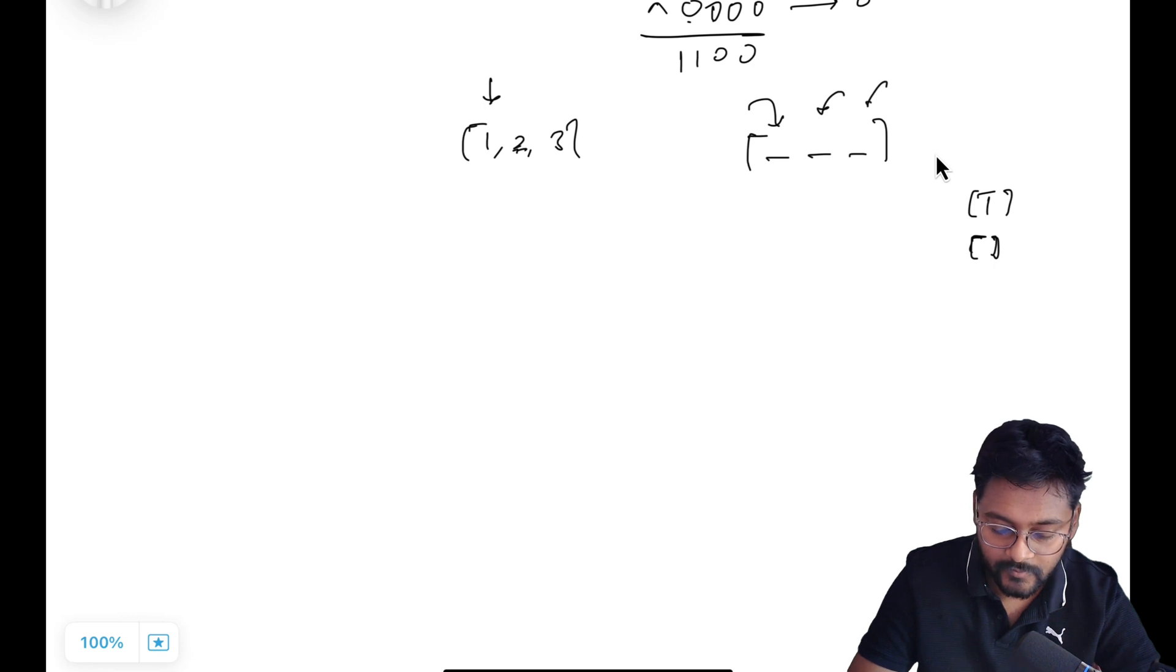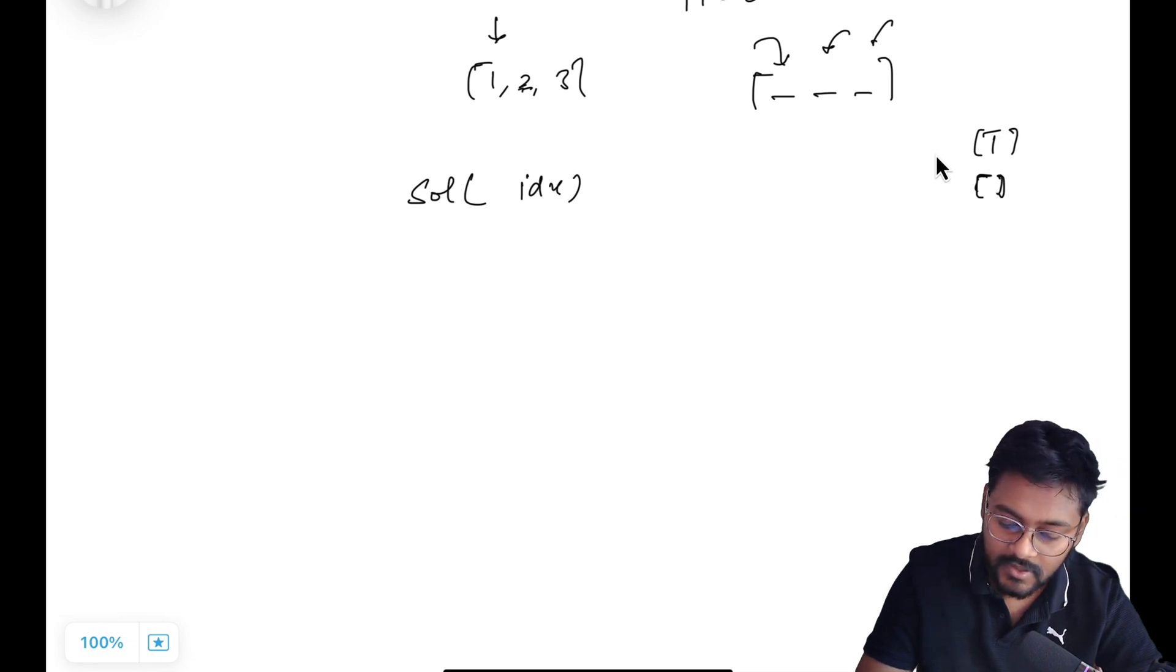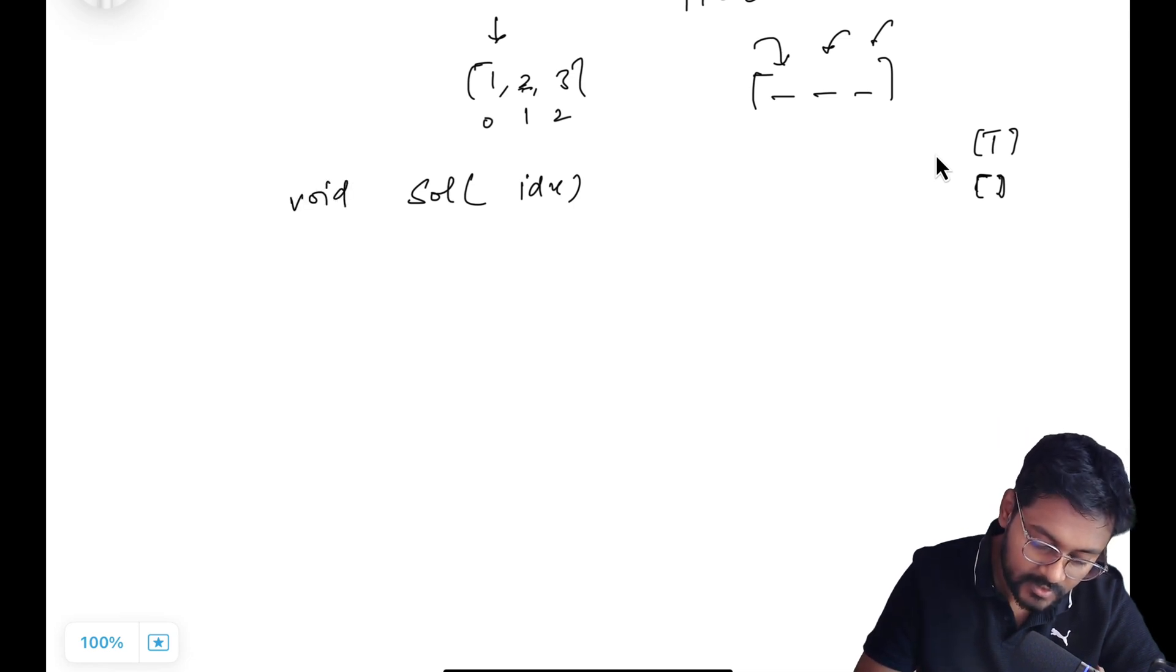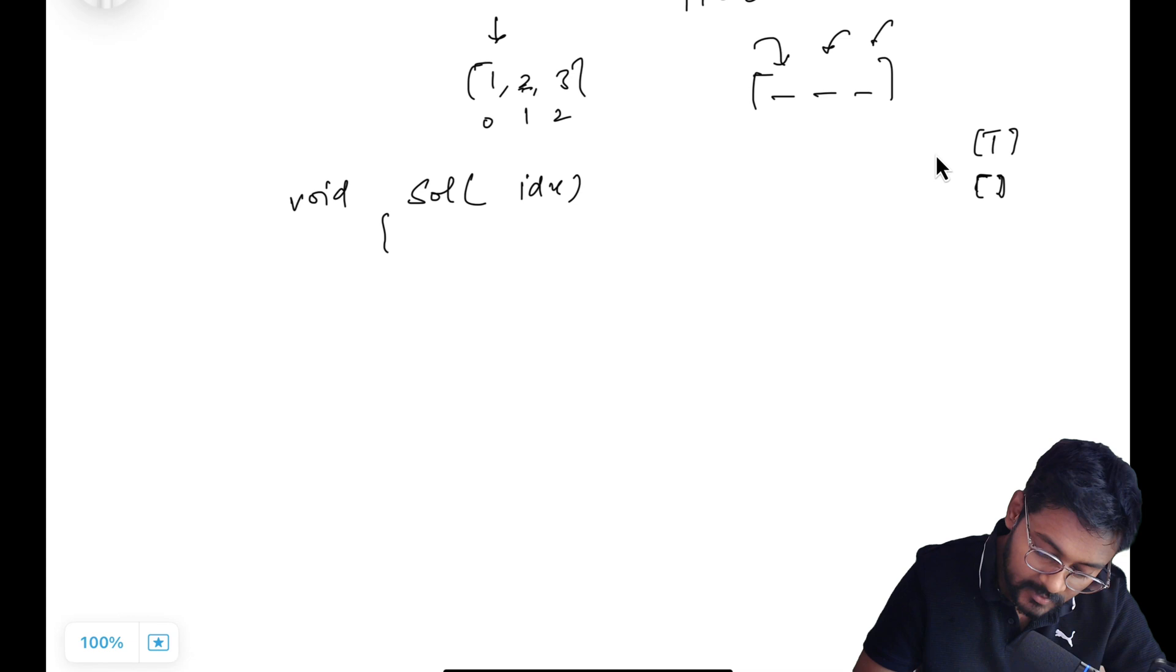So if I just write a function, I will be having an index that starting from what index I should start taking elements. So solution of 0, I should start taking elements from 0 and go till n-1. What this function is returning? Let's not return anything. Apart from that, I should be taking one variable. Let's say for now, I am just printing all the subsets.